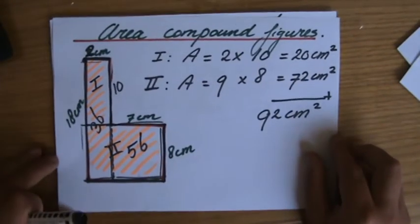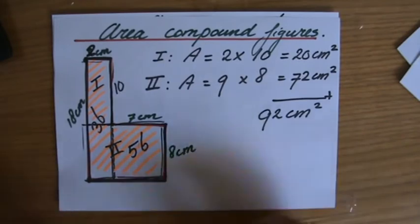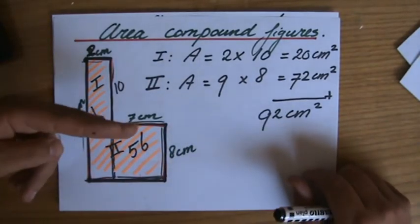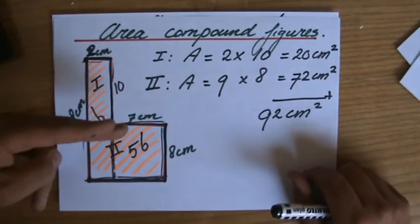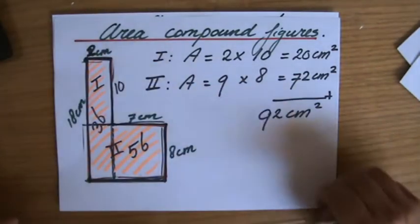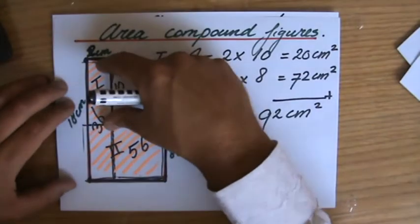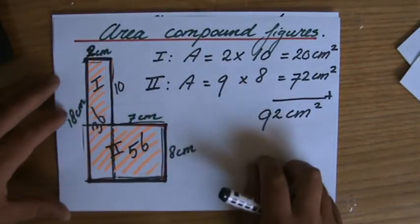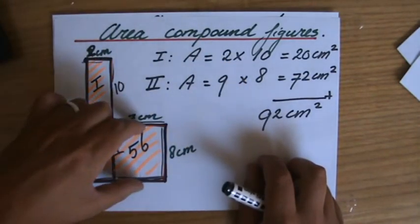So again I'm going to give you two options. You either cut it up - your compound figure cut it up into two rectangles. You can do it in different ways. You can have one rectangle and another rectangle or you can have here a bigger rectangle and a smaller rectangle.